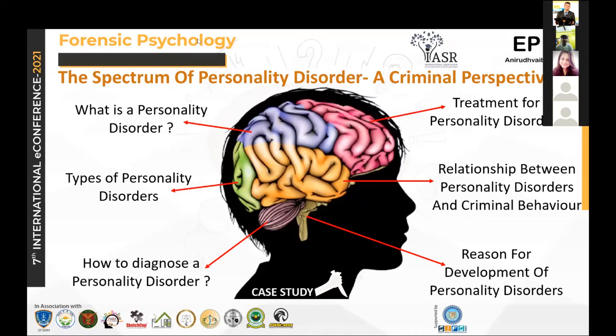What is a personality disorder? A personality disorder is a type of mental disorder in which an individual has a rigid and unhealthy pattern of thinking, functioning, and behaving. A person with a personality disorder has trouble perceiving and relating to situations and people around them, causing significant problems in their relationships, social activities, work, and school.